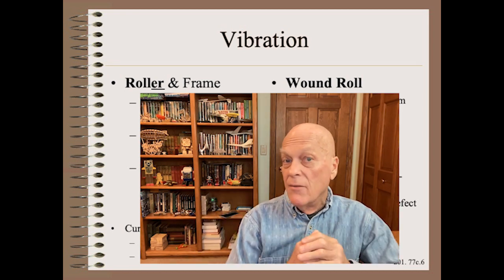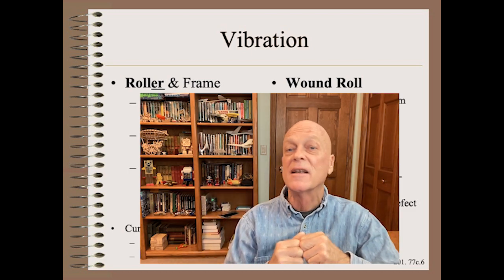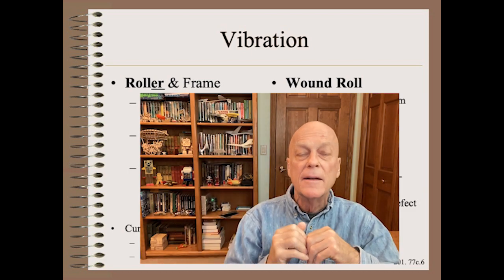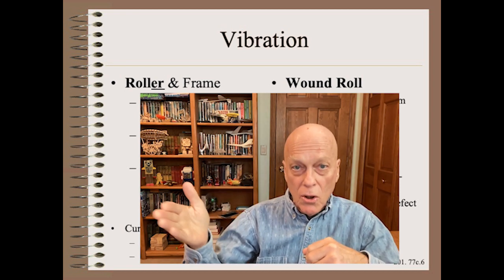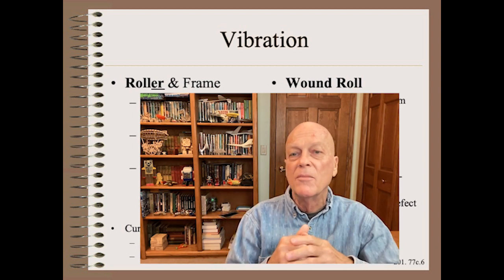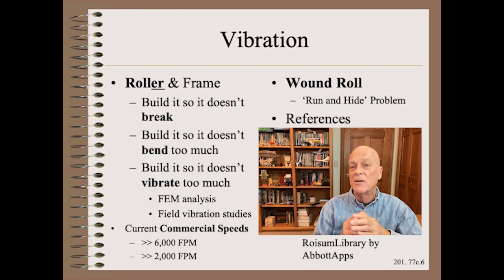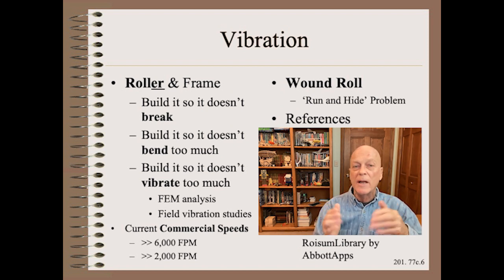An increasing level of complication happens when machine vibration increases unacceptably with speed. This again can be broken into the same two categories: roller and wound roll. The roller is the simpler of the two, but still far from simple. Only a few machine builders know how to reach very high speeds, and they are all in the paper industries — specifically paper mills, where speeds exceeding 6,000 feet per minute or 2,000 meters per minute are more routine.